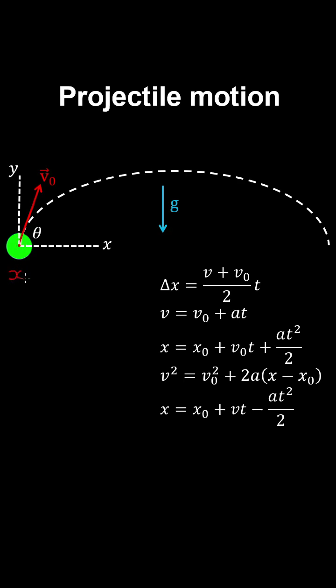The projectile is launched from a position of x0, y0 at an initial velocity v0. What we do is resolve this vector into these x and y components using the unit vectors.